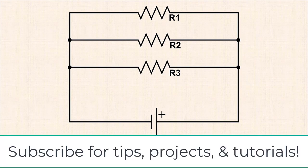This is called a parallel circuit. In a parallel circuit, the current has more than one path to follow.